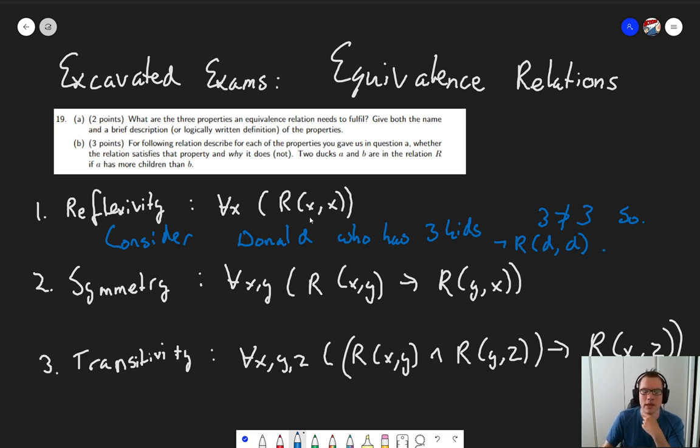All right, so we've come up with a very concrete example of a duck who has three kids. Well, three is not bigger than three. And as a result, the relation doesn't hold for Donald with itself. So, that's the first statement done, or the first property done.